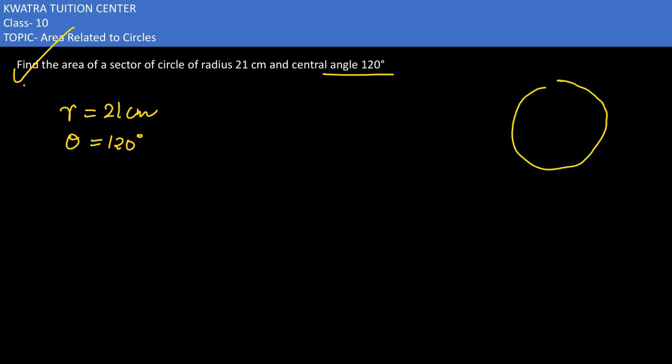If we create this diagram, what will come to us? Radius would be 21 in this case, theta would be 120 degree in this case, and we need to find area of sector.